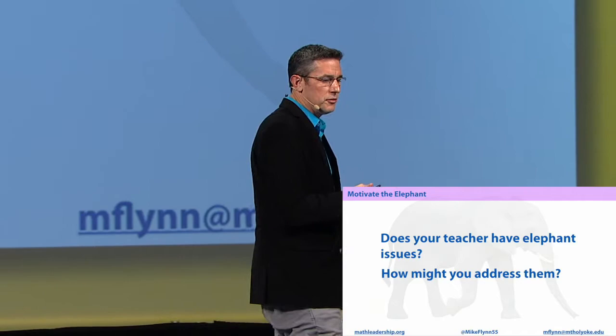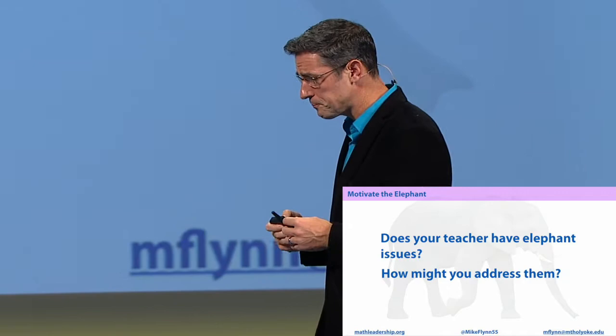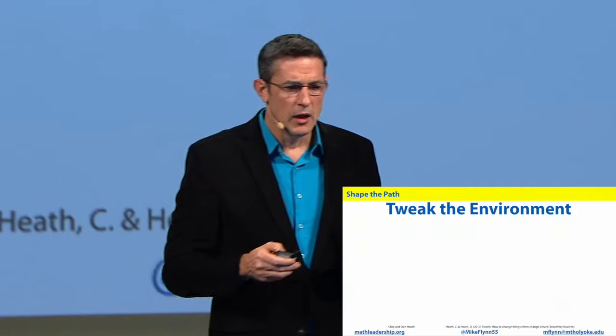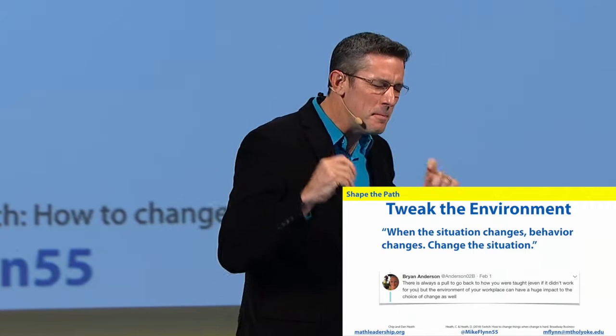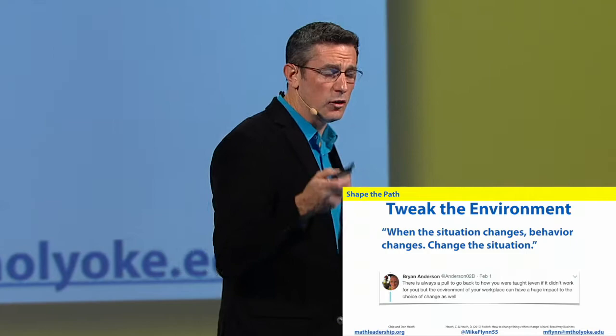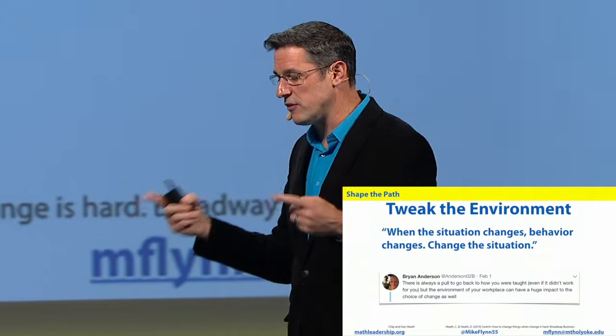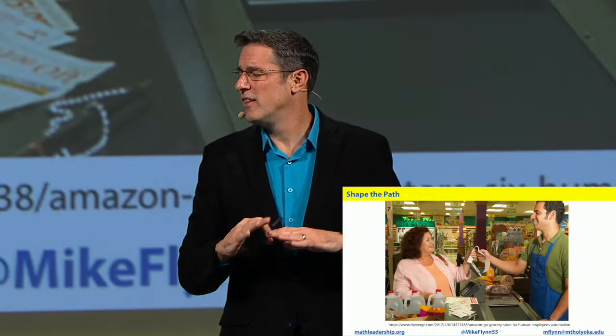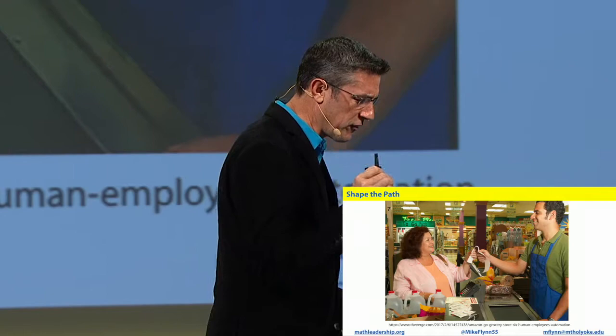Now think about your resistant teacher — the teacher who's exhibiting resistant behavior. Do they have elephant issues, and how might you address those? Now let's look at the final one: the path. We're going to shape our path so that we can start to make the environment more conducive to the change effort we want to support. The first suggestion: tweak your environment. If a situation changes, behavior changes — so change the situation. Sometimes you don't have to work on the person; if you change the environment, the behavior may change.